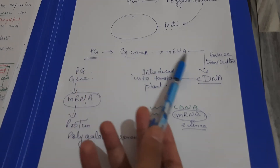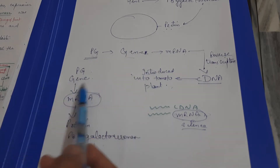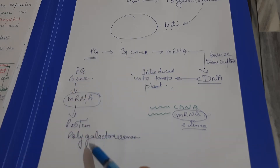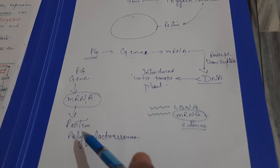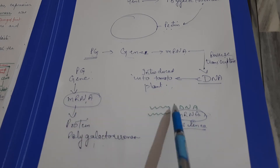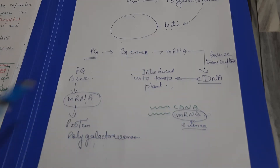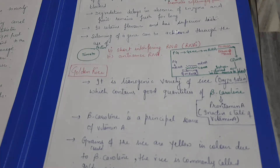So, the cDNA derived from the tomato's polygalacturonase gene is introduced back into the normal tomato plant. The cDNA silences the mRNA, so the enzyme that was causing early ripening is no longer produced, and the tomato remains fresh for a longer time. This is Flavor Savor tomato — another example of a transgenic plant and an application of biotechnology in agriculture.